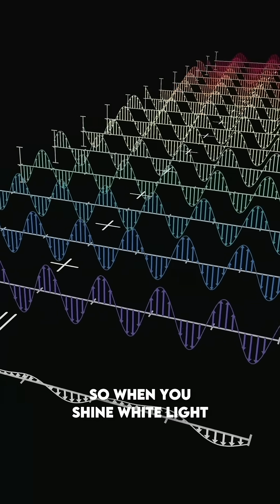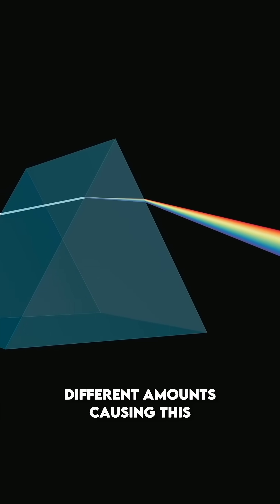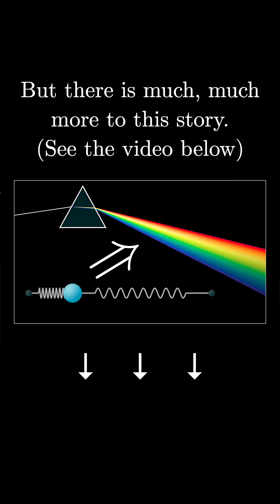So when you shine white light into a prism like this, all those different components get refracted by slightly different amounts, causing this iconic separation of the pure rainbow colors.